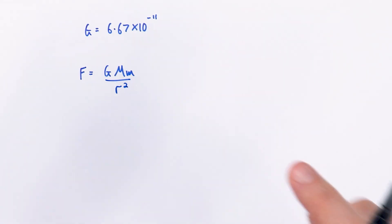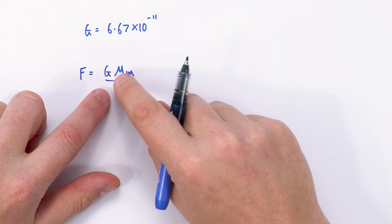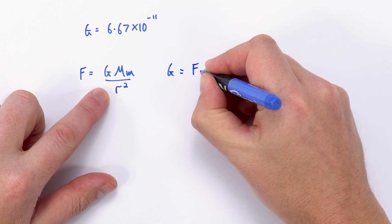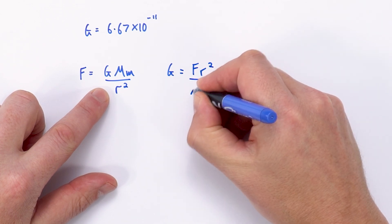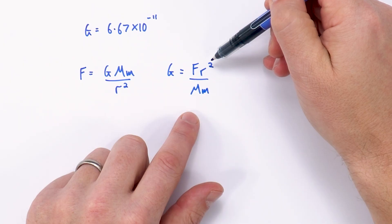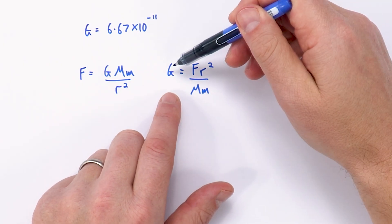Okay so this is an equation we're going to use and if we rearrange this to make G the subject, we can say that G is equal to FR squared over MM. So now if we think about the units for each of these terms we can use that to write a value of G.